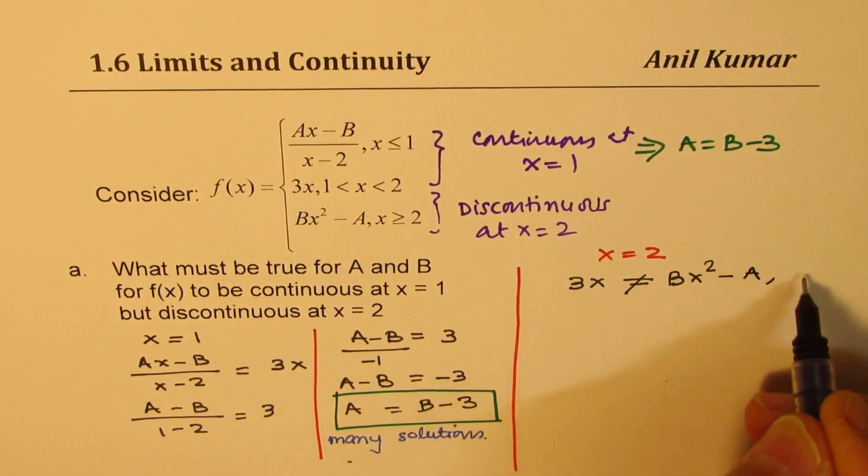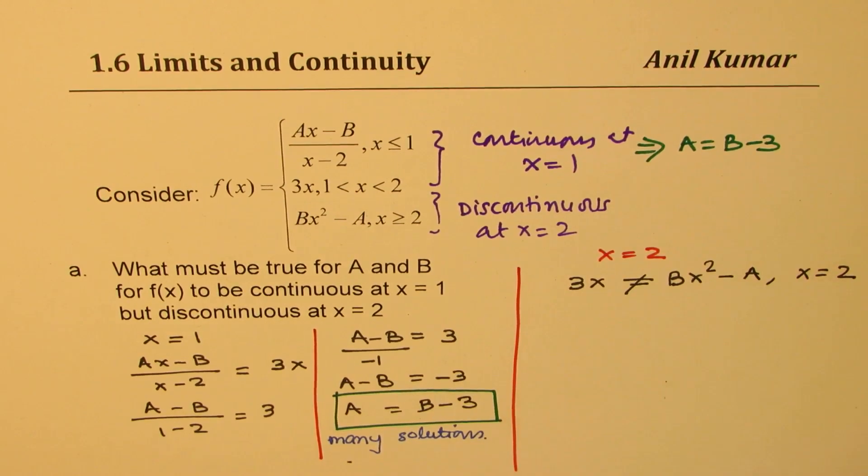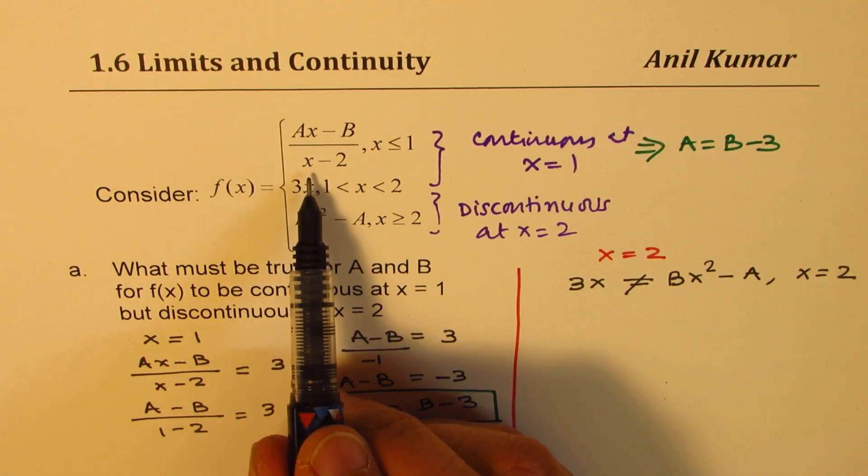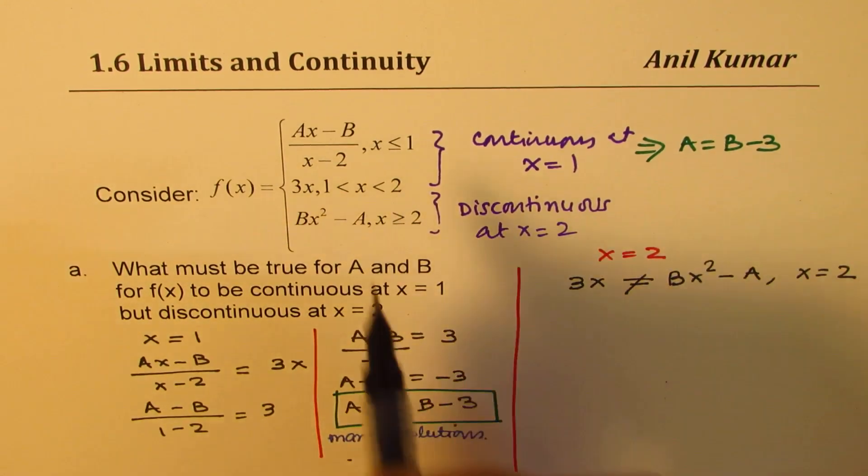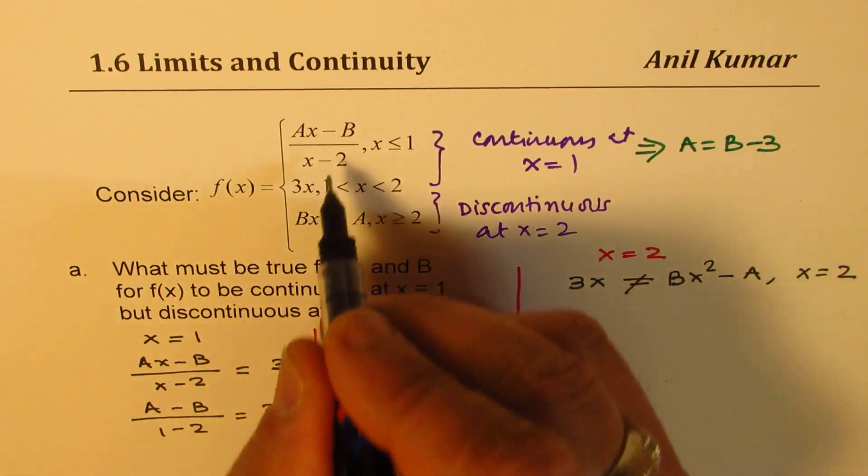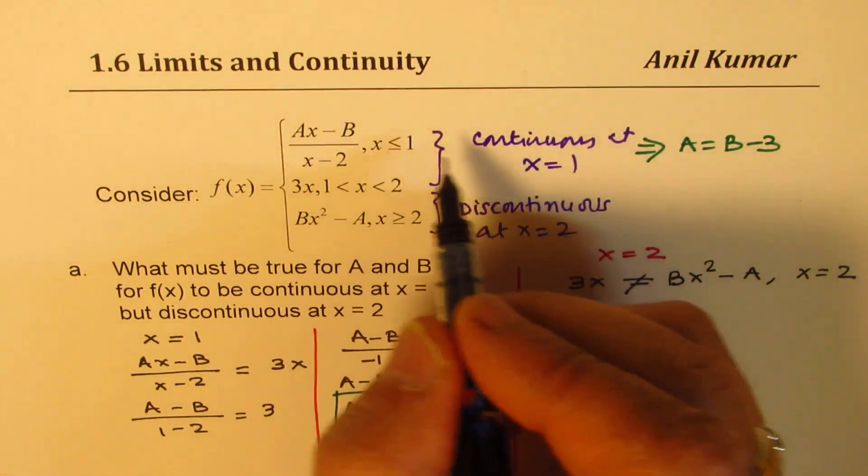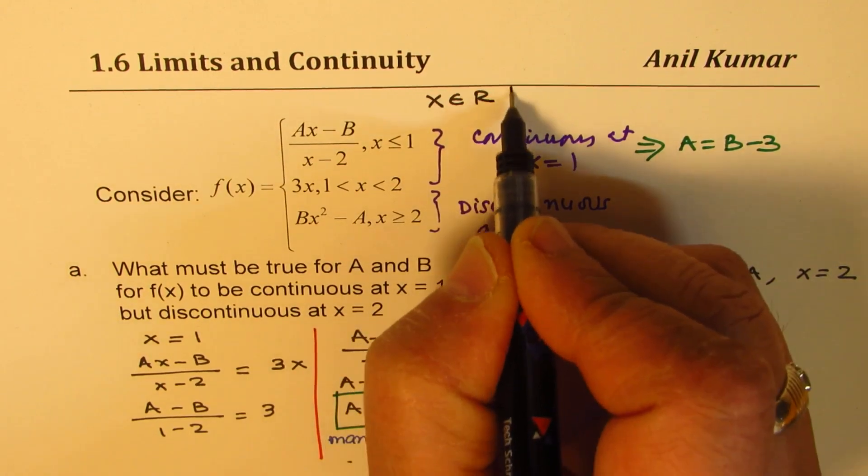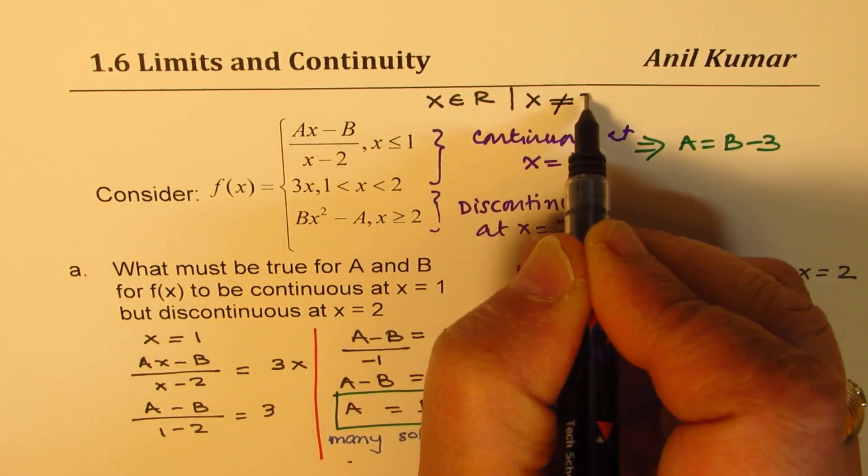That is what we're trying to say. Also remember there is a discontinuity, x is not equal to 2. So it's important to write down a condition that x belongs to real numbers but x is not equal to 2. That's the domain of our function.